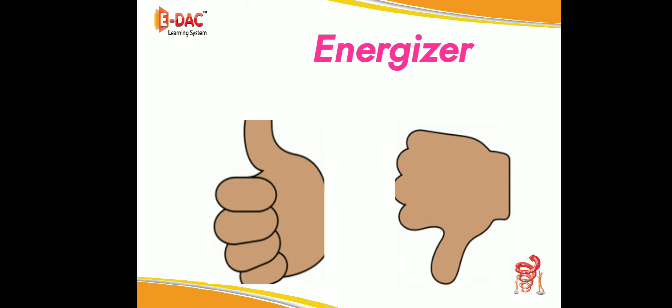That is, up and down. Listen, children. First I will give you the instructions — you should listen and do. If I say up, you have to show thumbs up. If I say down, you have to do thumbs down. Children, are you clear with the instructions? Yes. Are you ready? Yes. Let's start.